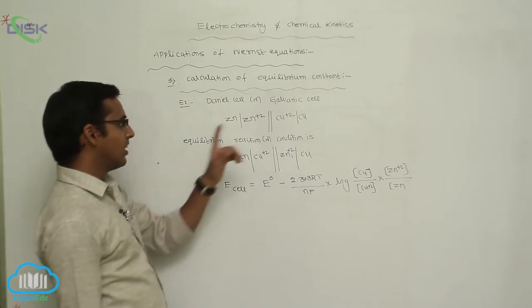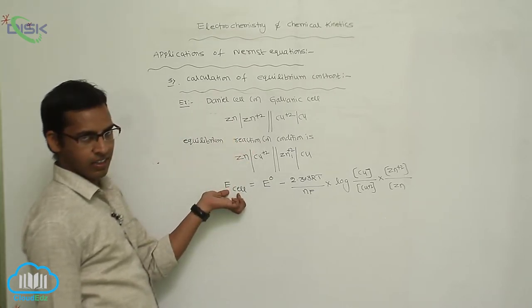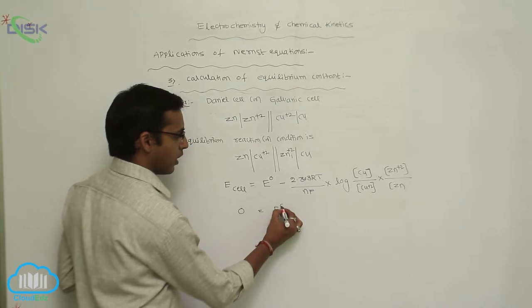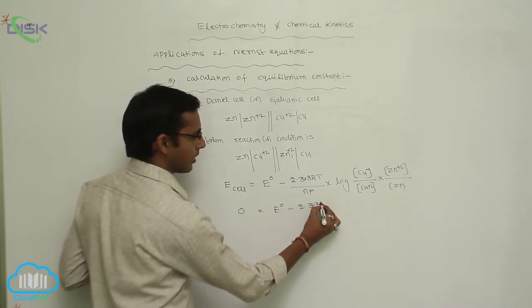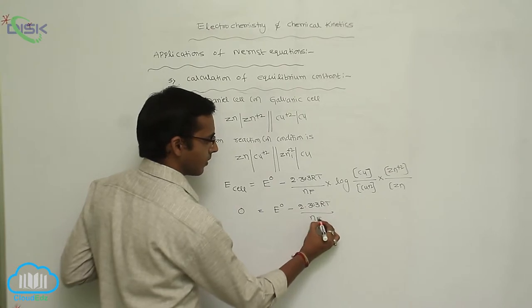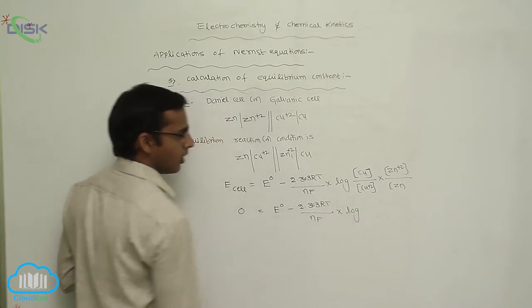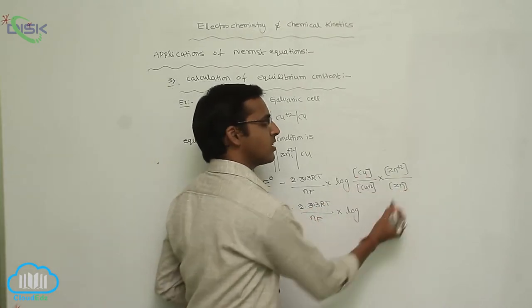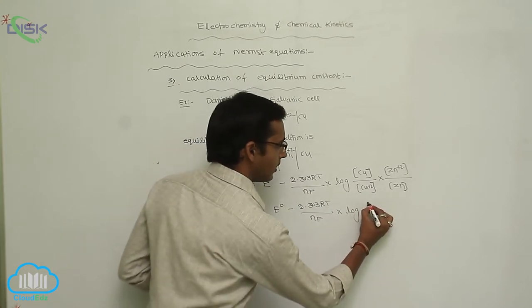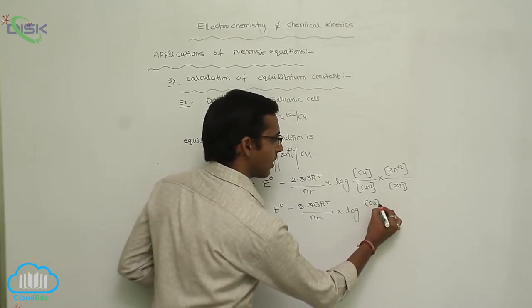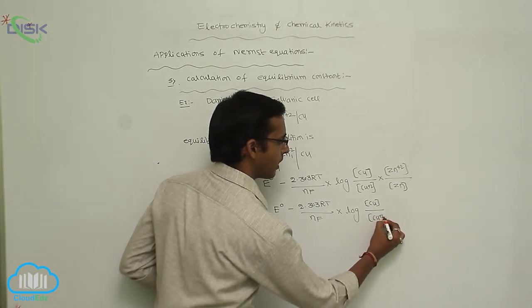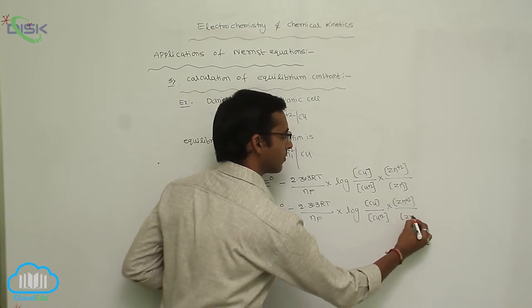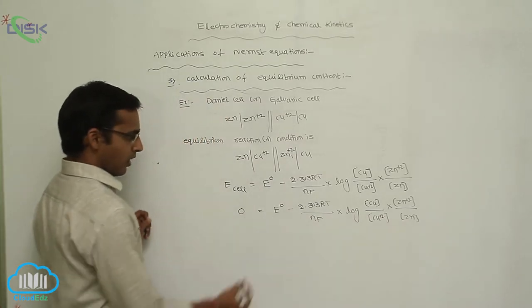In this equilibrium reaction, the E_cell, the EMF of the cell, is equal to zero. That gives: 0 = E° − (2.303RT/Nf) · log Q. The activity of pure metals Cu and Zn are each considered unity, so their concentrations cancel, leaving the concentration of copper ion and zinc ion.